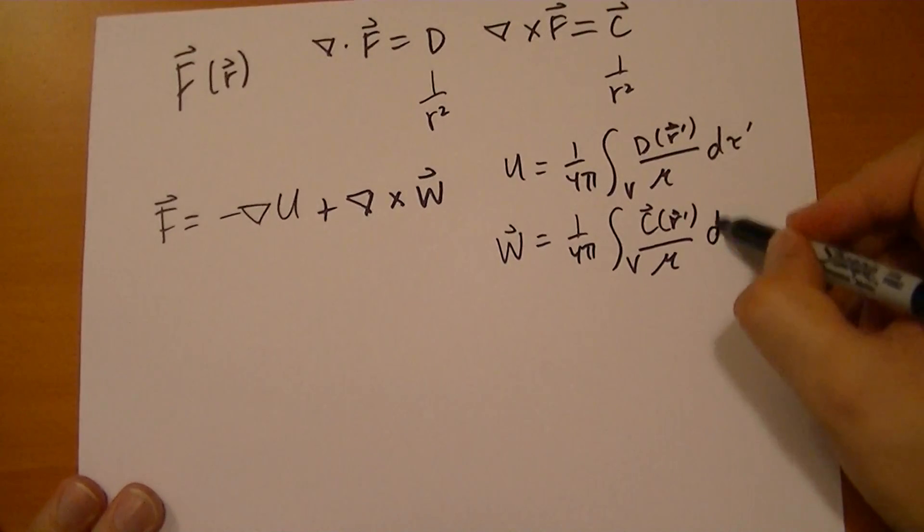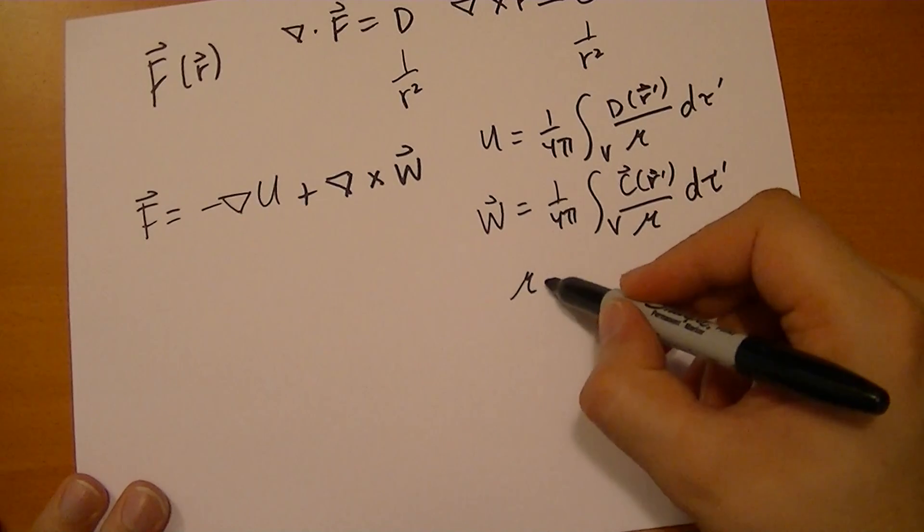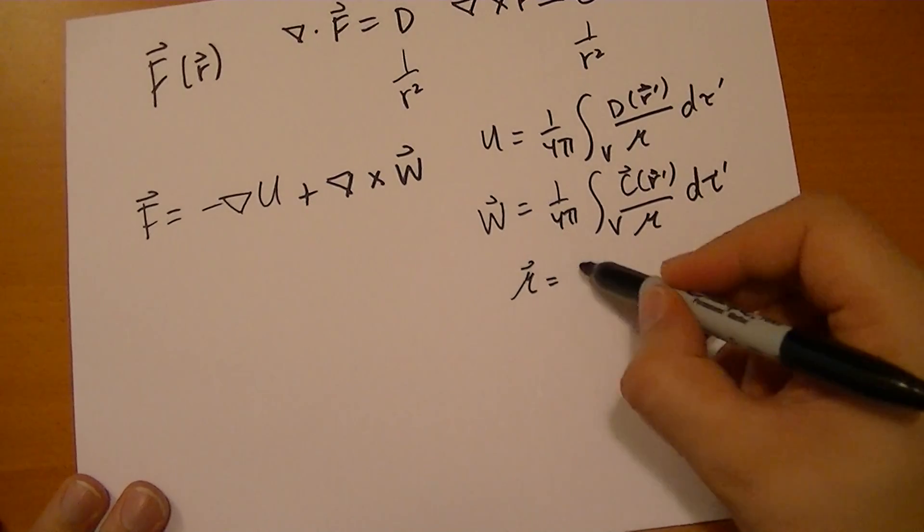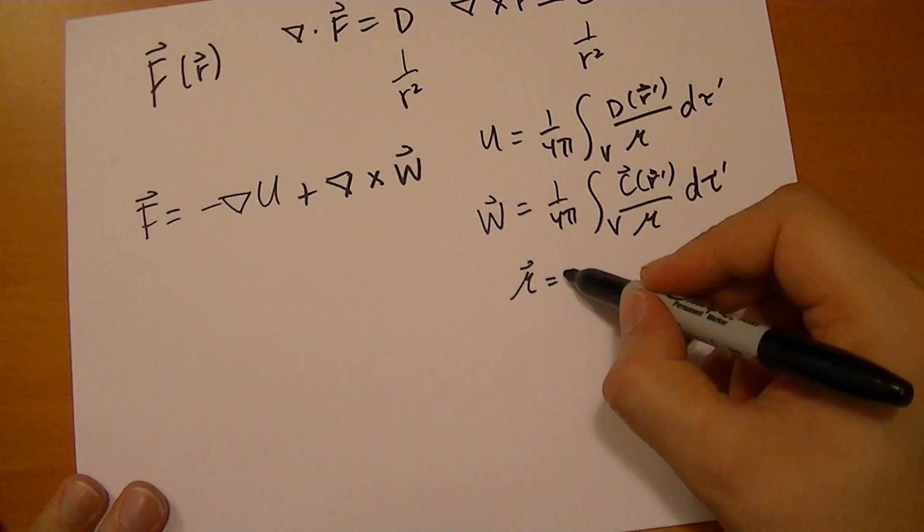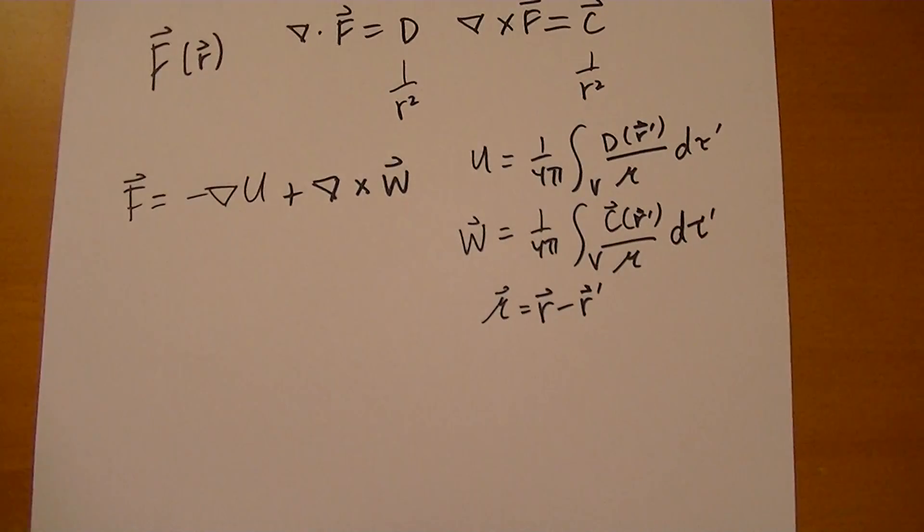Where R dot prime. Where that curly R on the bottom is equal to R vector minus R vector prime. And the prime vectors are used inside the integral. That's why we need to use them so we don't confuse that with the R's outside.